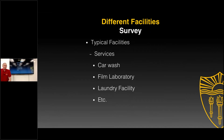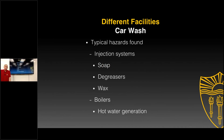When we start looking at typical facilities under the services category, there's a variety of things you'll find — from car wash to a film laboratory, laundry facility, and so on. As we start looking at typical facilities in each of those categories from the USC manual, you need to consider the things you might find at each. Take the car wash as an example. The typical hazards are going to be injection systems — maybe soap, degreasers, wax — and there may be boilers on site for hot water generation.